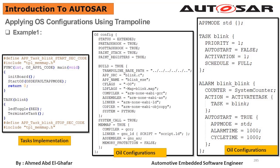But if this attribute is equal to 'none', it will be non-preemptive scheduling, which means that task switching is only performed via explicitly defined system services. Now we have discussed all the OIL configuration for this task — let's discuss now the OIL configuration for the alarm.